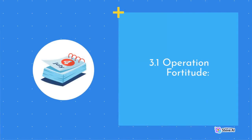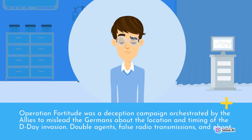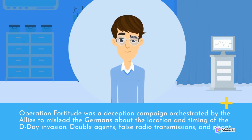Operation Fortitude was a deception campaign orchestrated by the Allies to mislead the Germans about the location and timing of the D-Day invasion.